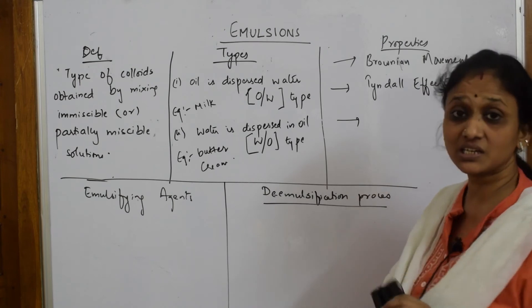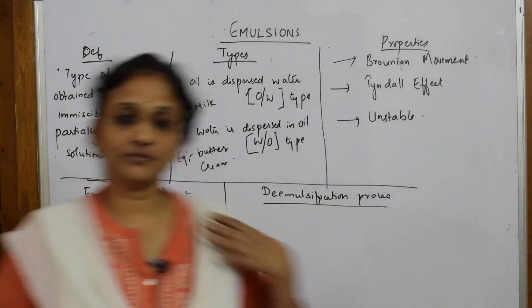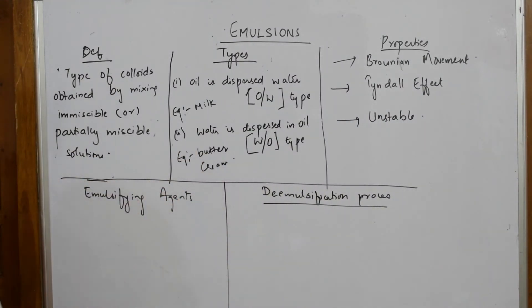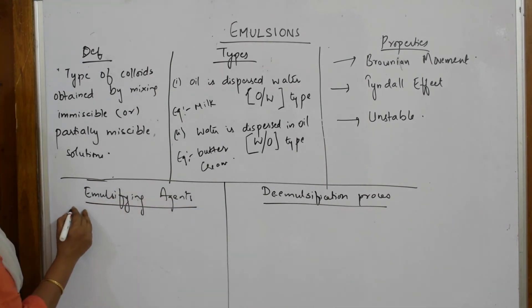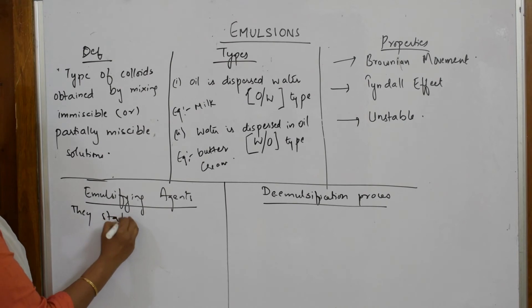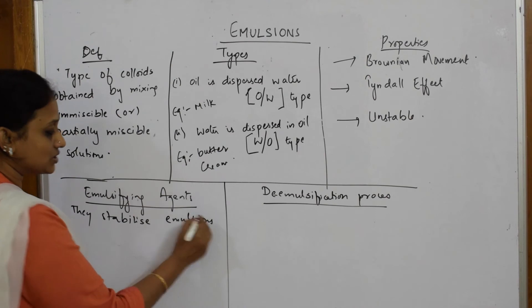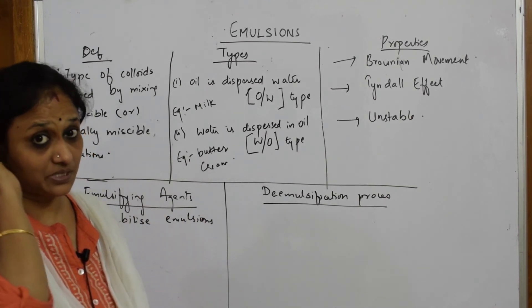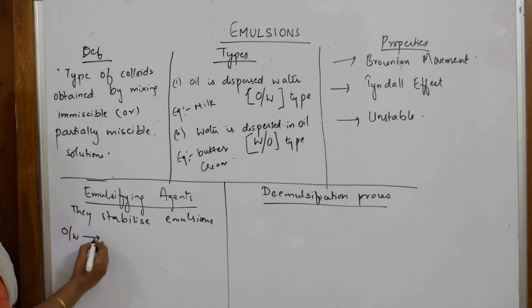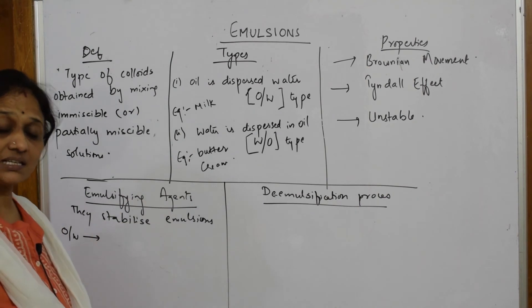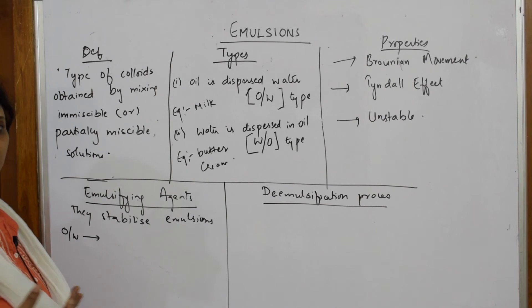Emulsions are highly unstable in nature. To make them stable, we add emulsifying agents. The role of emulsifying agents is to stabilize emulsions — to maintain and keep the emulsion stable. For example, for an oil-in-water type emulsion like milk, we can add a stabilizing agent.